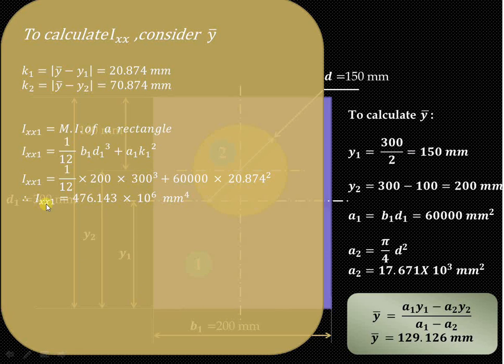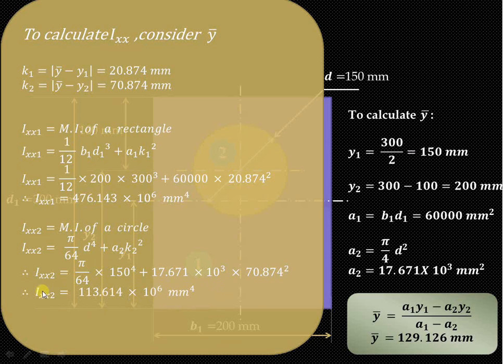Similarly, Ixx2 is the moment of inertia of the second section, that is the circle which we have cut out from the rectangle. According to the parallel axis theorem, the moment of inertia of a circle is given by (π/64)d⁴ + a2k2². The value of diameter is 150, and a2 and k2 we have already calculated. Substitute all these values and you'll get the value of Ixx2 as 113.614 × 10⁶ mm⁴.